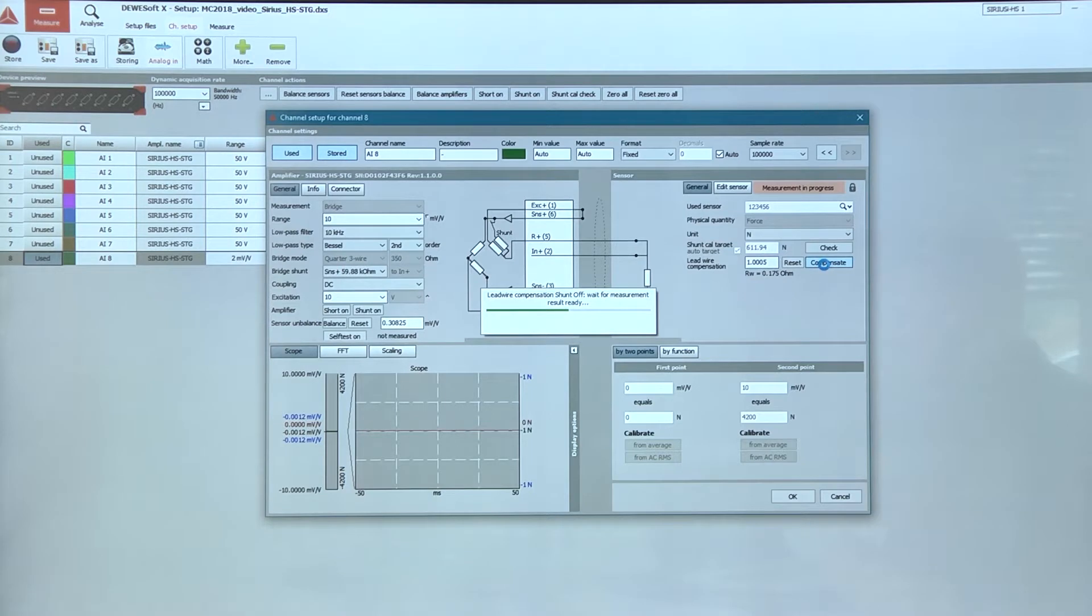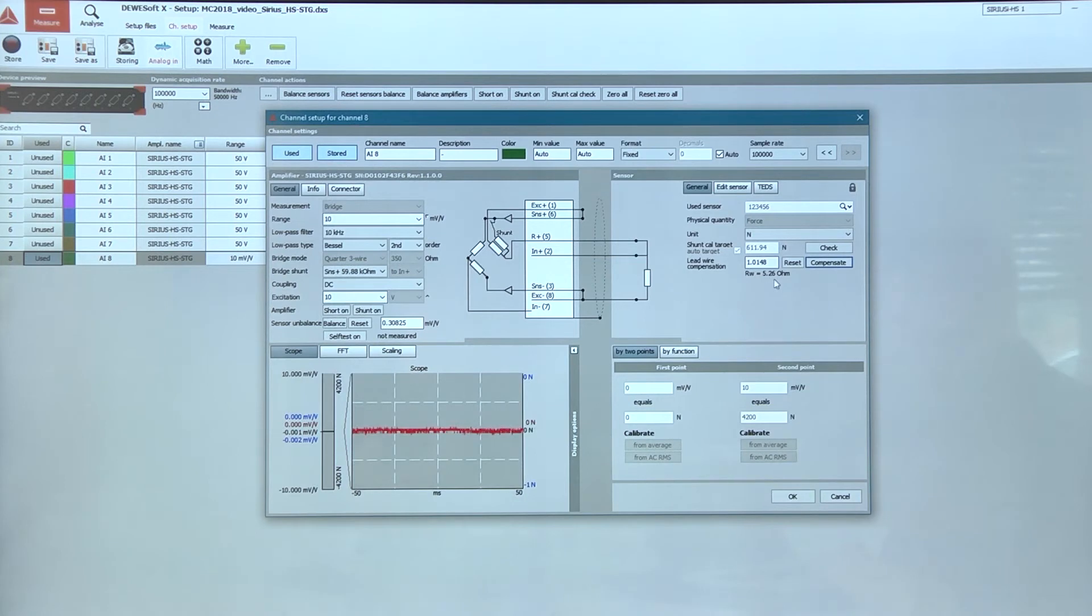We click the Compensate button, wait for a second and we can see that our simulated wires have approximately 5 ohms.